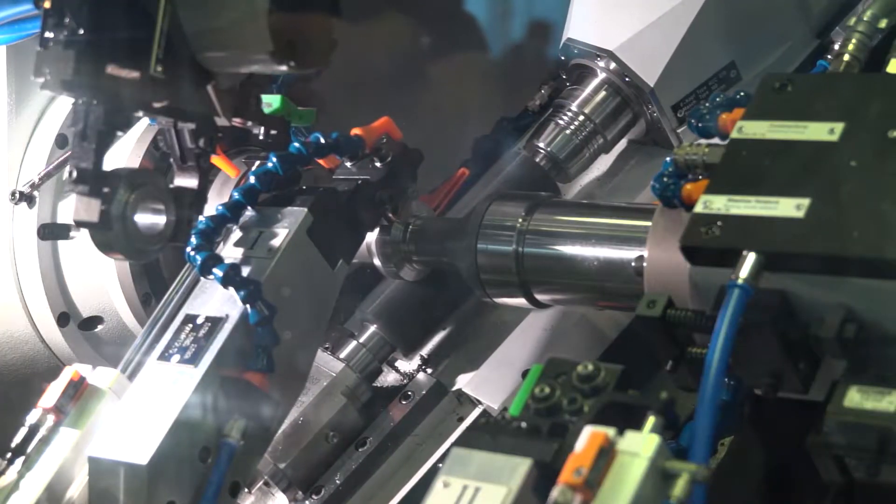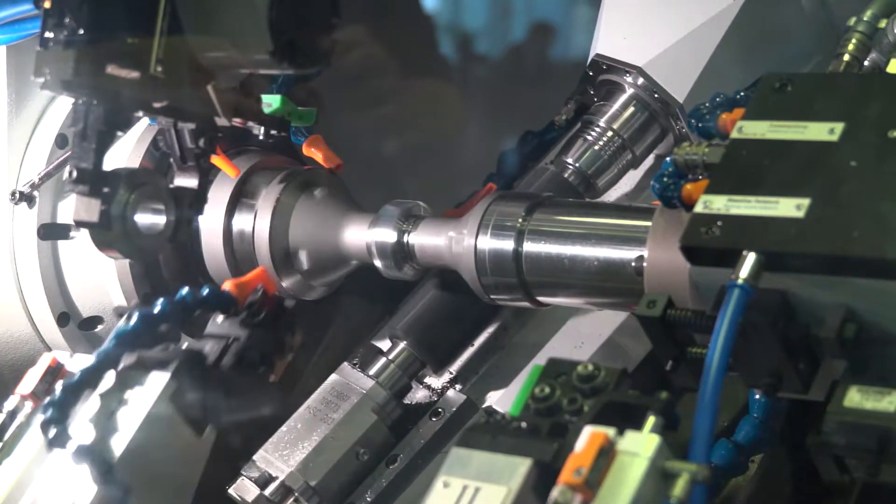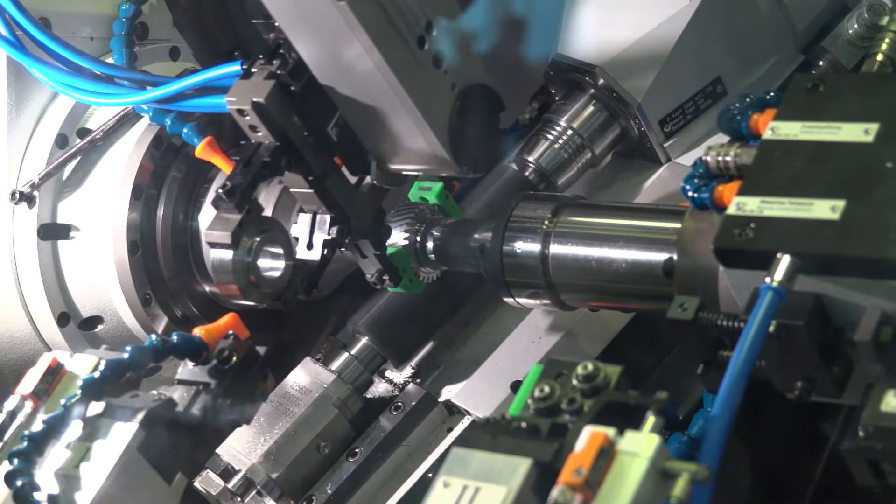That means the workpiece is hobbed after turning, then it will go to the hardening process and afterwards it will be ground in this case.